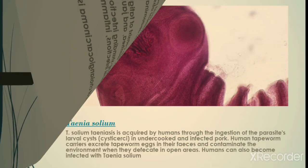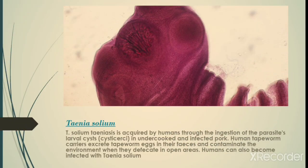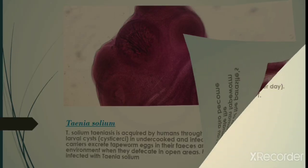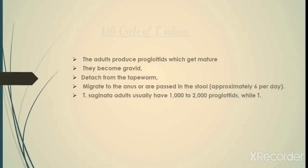Now we talk about Taenia solium. Taenia solium cysts are acquired by humans through the ingestion of parasite larval cysts in undercooked infected pork. Human tapeworm carriers excrete tapeworm eggs in their feces and contaminate the environment when they defecate in open areas. Humans can also become infected with Taenia solium through this route.